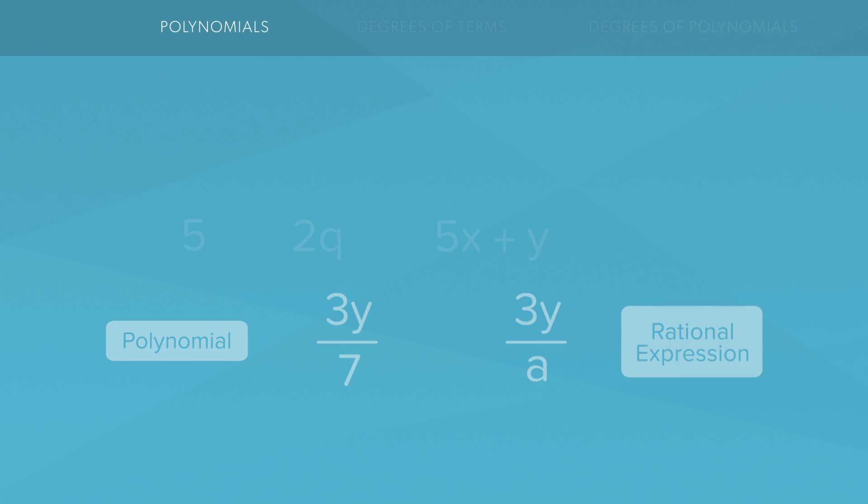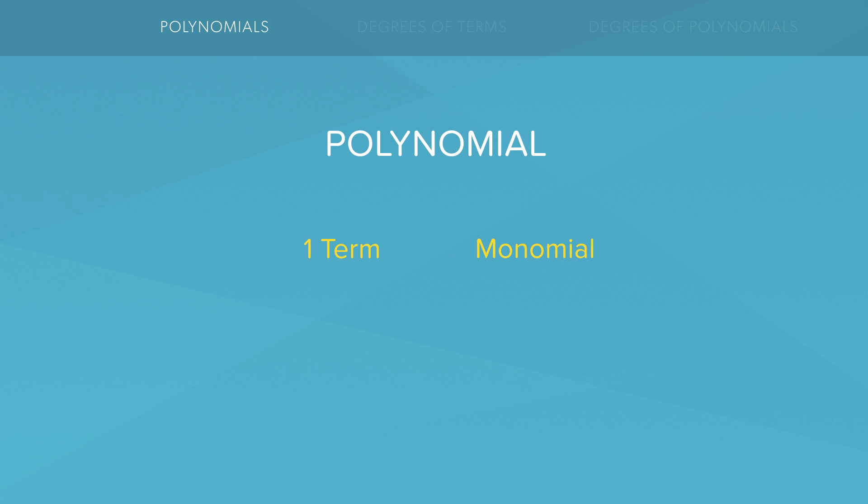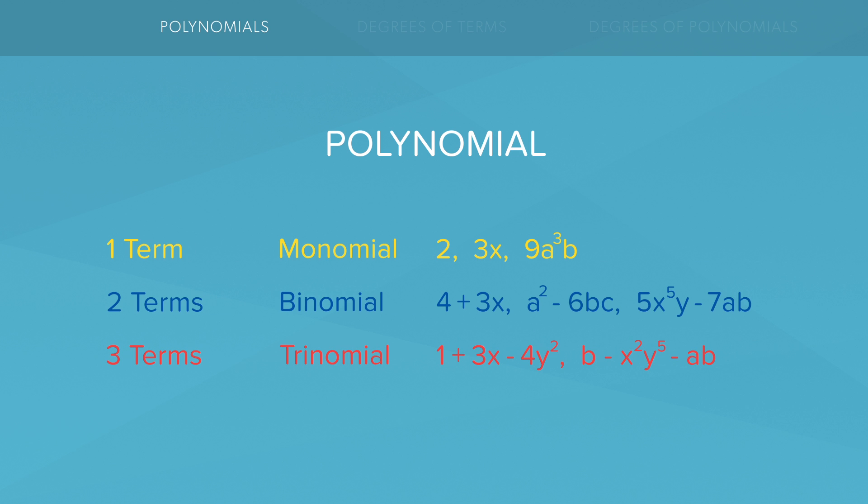Awesome! Now if a polynomial has exactly one term then we can call it something else. We can call it a monomial. If the polynomial has two terms we can call it a binomial. And if a polynomial has three terms then we can call it a trinomial. So feel free to pause the video and take a look at some of the examples that we have written out for you for the monomials, binomials, and trinomials.